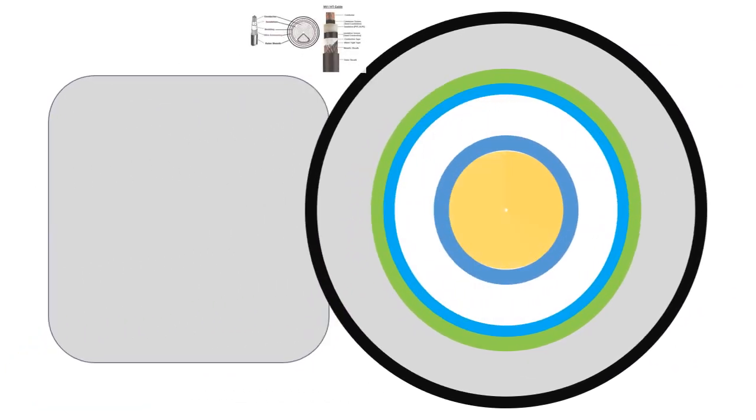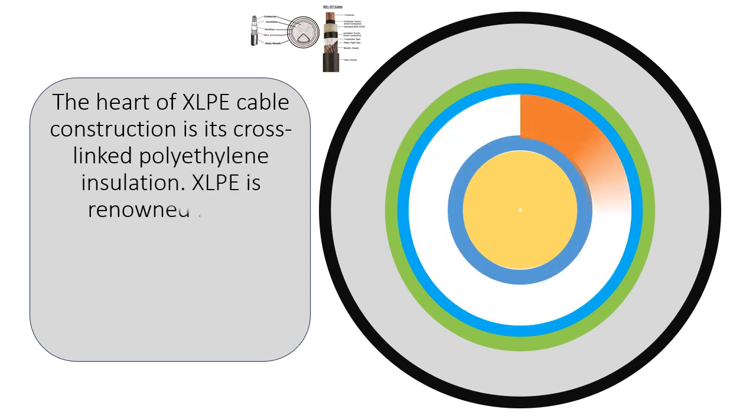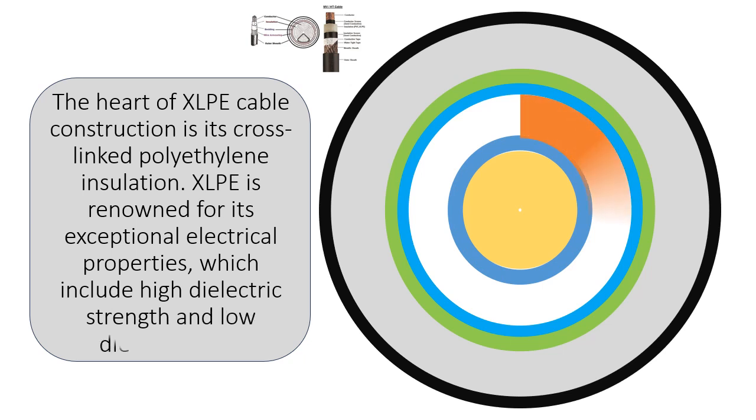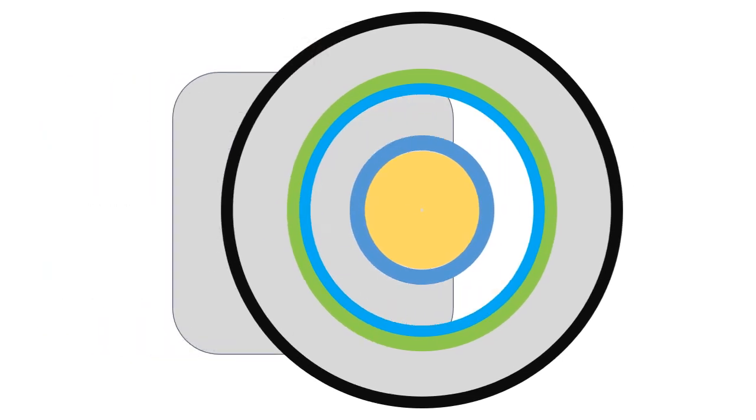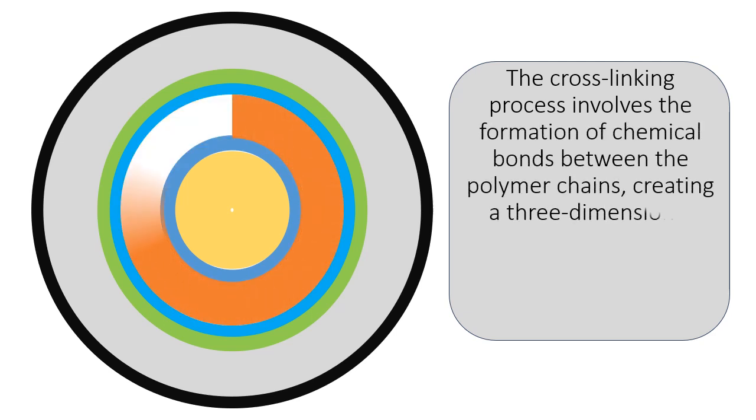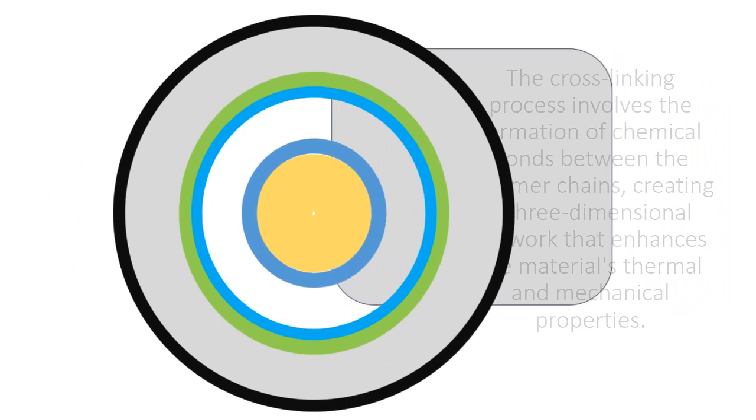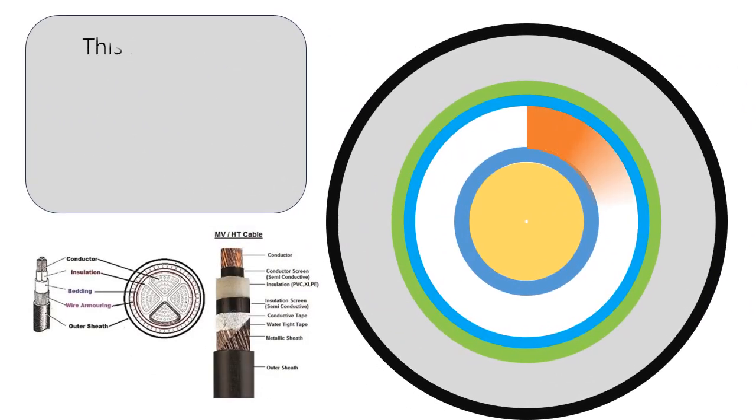Insulation: The heart of XLPE cable construction is its cross-linked polyethylene insulation. XLPE is renowned for its exceptional electrical properties, which include high dielectric strength and low dielectric loss. The cross-linking process involves the formation of chemical bonds between the polymer chains, creating a three-dimensional network that enhances the material's thermal and mechanical properties. This insulation is extruded over the conductor, providing a barrier against electrical leakage and ensuring long-term reliability.